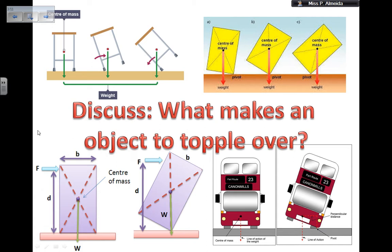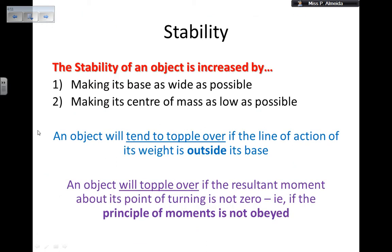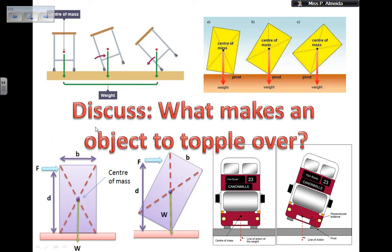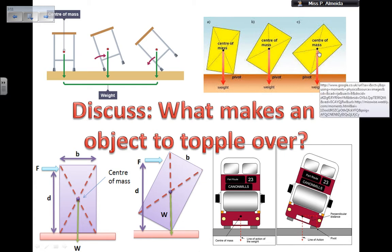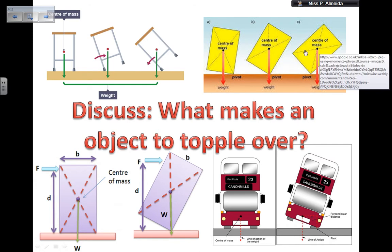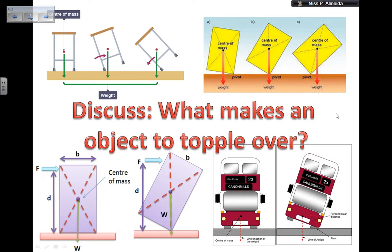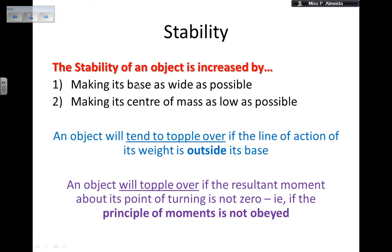I'm going to show you the answers now, so pause the video if you want to think about it further. The stability of an object — I can increase it by making the base as wide as possible, or making the center of mass as low as possible. An object topples over if the line of action of the weight goes beyond the pivot. So if I have the base to be wider, then I would have to move the object even more, incline it even more, for it to topple over. That is making the base as wide as possible.